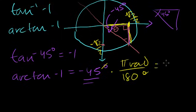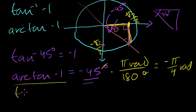You have 45 over 180, this goes four times, so this is equal to, you have the minus sign, minus pi over 4 radians. So the arctangent of minus 1 is equal to minus pi over 4. Or the inverse tangent of minus 1 is also equal to minus pi over 4.